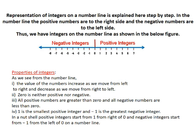Now, how to represent integers on a number line? You can see the figure drawn below it. All the numbers which are towards the right of 0 are called positive integers. And all the numbers which are towards the left of 0, they are all called negative integers.